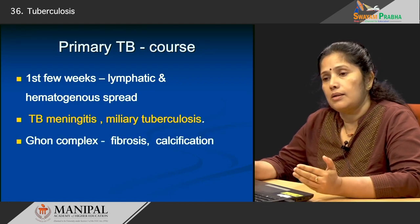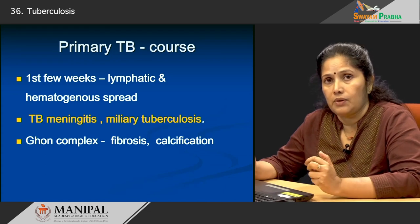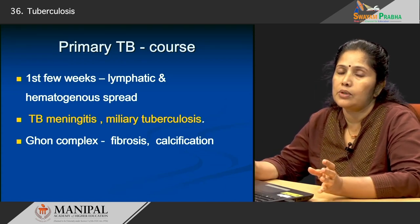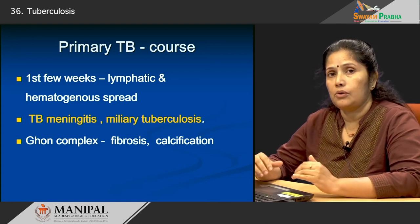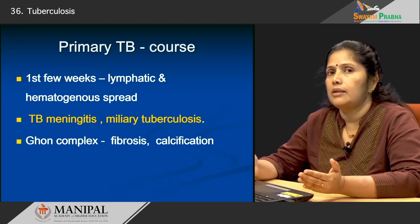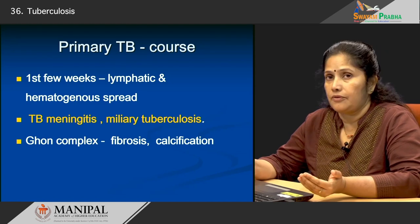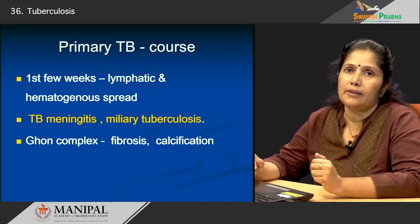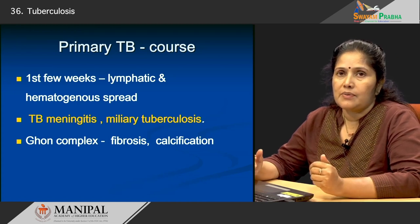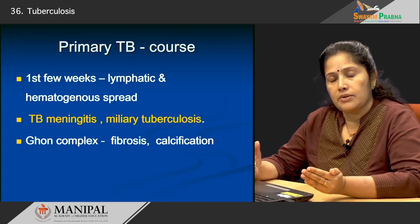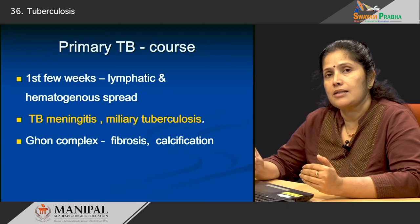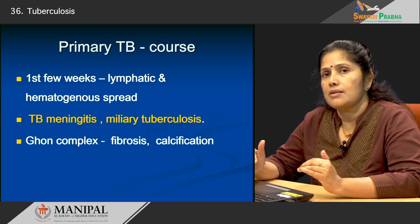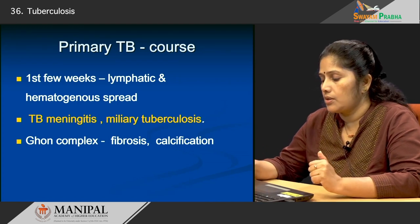The Ghon's complex — the pulmonary lesion along with the hilar lymph node lesion — can undergo fibrosis and beyond that can calcify. These calcified lesions can be picked up on X-rays. Sometimes when you take X-rays of patients you will find a calcified lesion either in the lung or in the hilar lymph node region, representing old healed tuberculosis.